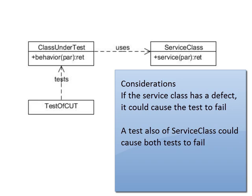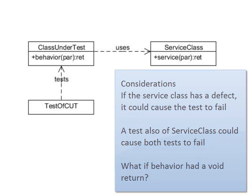Also, we would then potentially have a test which is also of the service class, and it could be very easy then to make both of those tests fail together, which can be a problem as well. Also, I've set myself up to win here because the behavior method returns something that the test can test. What if it didn't? What if it had a void return, and the only thing that method did was have some kind of effect on the service class? How could I make sure in my test that it did the right thing? So all of these things are solvable using mock objects.